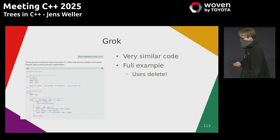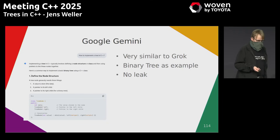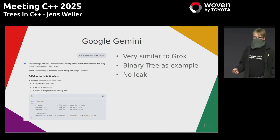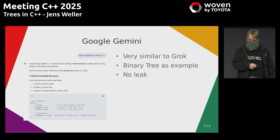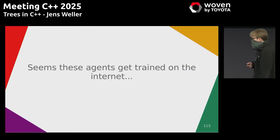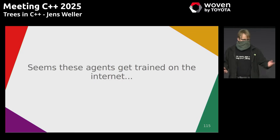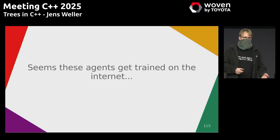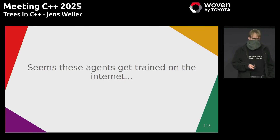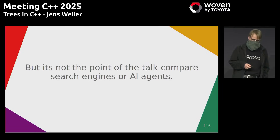Grok at least seems to take care of deleting things. I've also used Google Gemini and it seems to hold up when you ask programming questions. My general impression is that these chat agents — AI, whatever you want to call them — were trained on the internet and are basically interactive web search engines that can give you the wrong answer, or sometimes don't know where they got the answer from. But that's not the point of this talk.